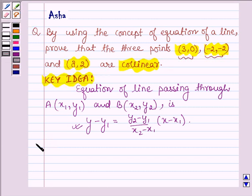Let us now start with the solution and let us name the points as A, B and the third point as C. So first let us find the equation of line passing through points A and B.